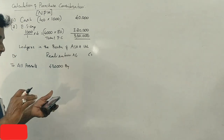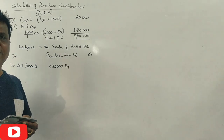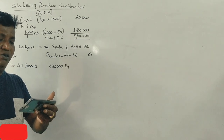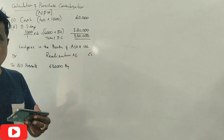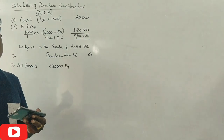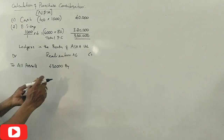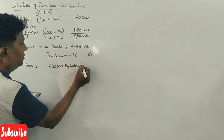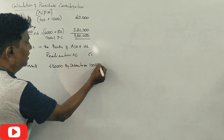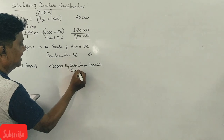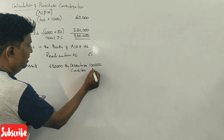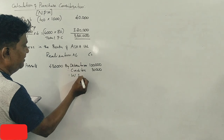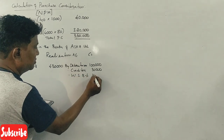Next, on the credit side, you have liabilities. Liabilities include creditors, workmen's savings bank account, and debentures. Debentures are Rs.1,00,000. Creditors are Rs.30,000. Workmen's savings bank account is Rs.10,000. Total liabilities are Rs.1,40,000.